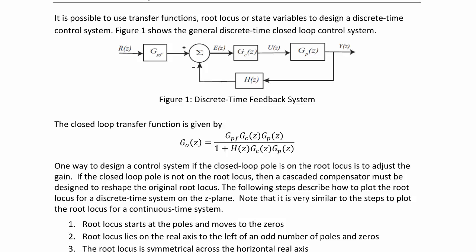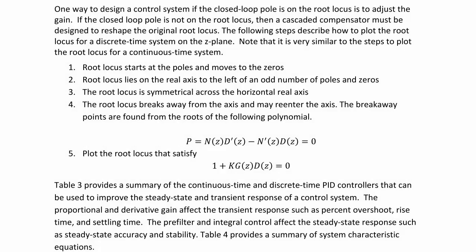One way to design a control system if the closed loop pole is on the root locus is to simply adjust the gain K. If the closed loop pole is not on the root locus, then a cascaded compensator must be designed to reshape the original root locus. The following steps describe how to plot the root locus for a discrete time system on the Z-plane, and you should notice it is very similar to the steps for a continuous time system.